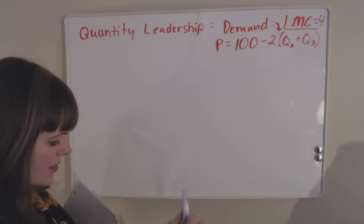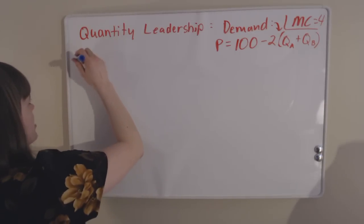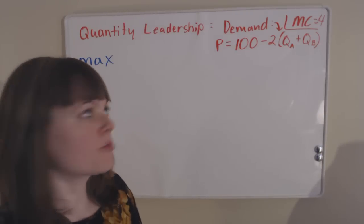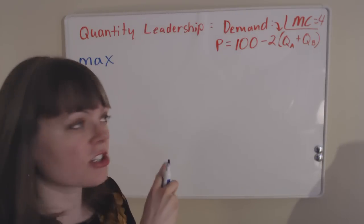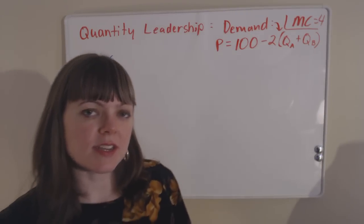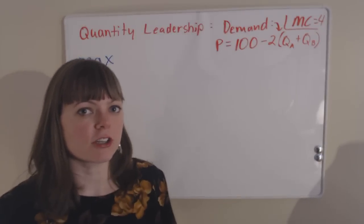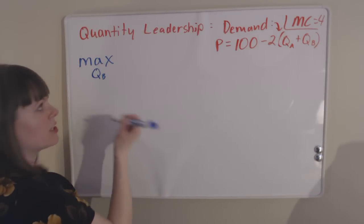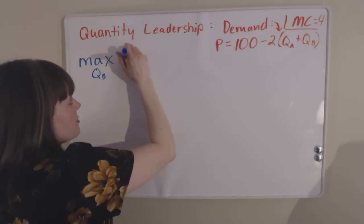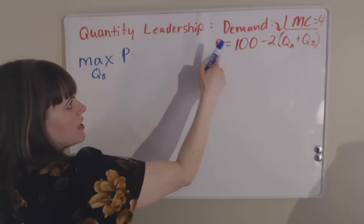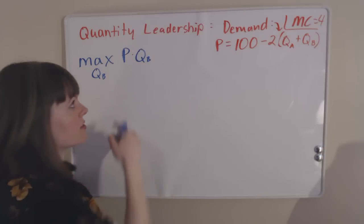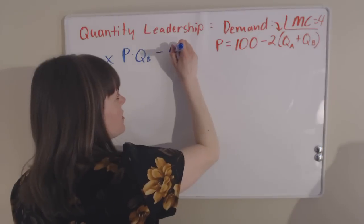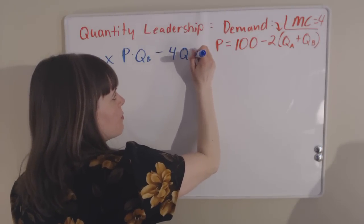We set this up the way we always set up our maximization problems. We maximize by choosing our choice variable, and since this is quantity leadership, we're going to use backwards induction and solve firm B's problem first. Their choice variable is the quantity that firm B chooses, and we're going to maximize as usual price, which is the industry price, times quantity that we produce, that's our total revenue, minus the $4 per unit that it costs to create times the quantity we produce.